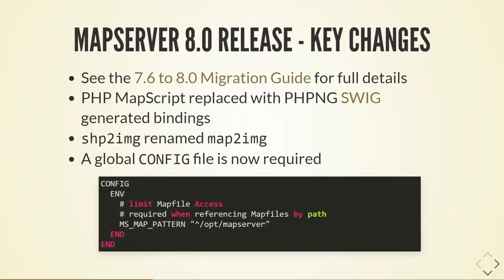If you're looking to upgrade, there's a migration guide online covering all the changes. The PHP MapScript native bindings are gone, replaced with PHP NG SWIG-generated bindings. MapScript is a language for manipulating MapServer — you can use Python, C#, PHP, TCL, and various other languages. Now they're all generated using SWIG, so they all have the same API and interface. Another change: if anyone uses shp2img for testing, it's being renamed map2img, since we're generating maps rather than just rendering shapefiles.